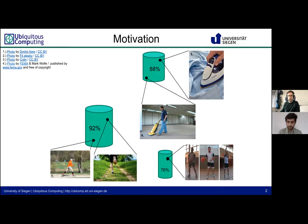To overcome this issue, we can create new datasets that meet these criteria, or we can try to enhance available datasets with techniques like data augmentation. Data augmentation originally comes from computer vision and is well researched with respect to visual data, but it is still an active research area when it comes to human activity recognition and sensor-based data.